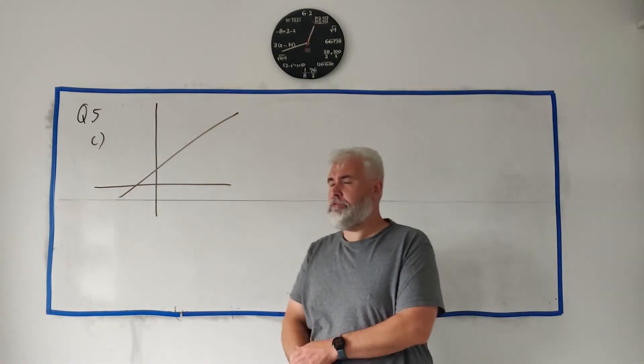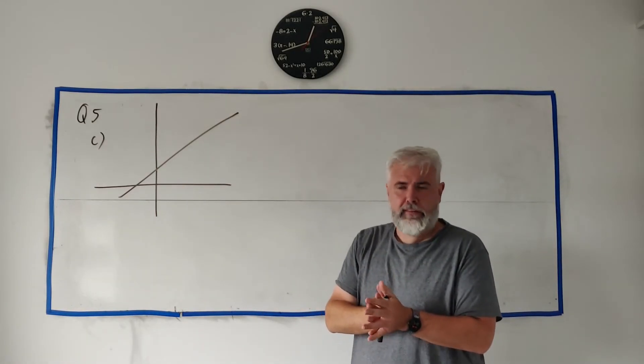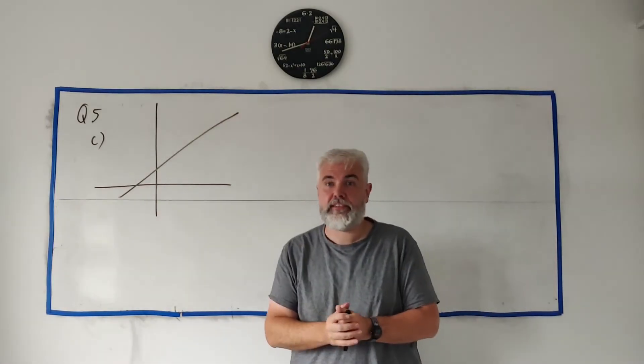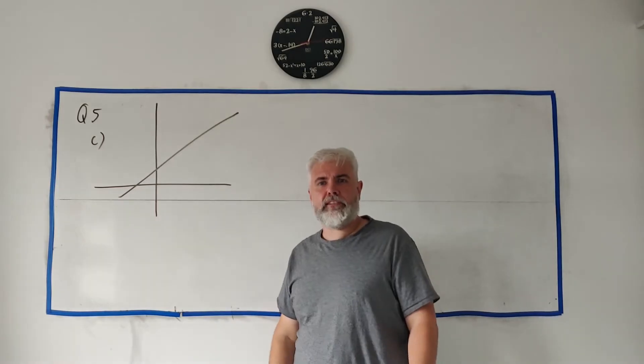In part C they give us a function they call g(x) and they say it's a linear function. Now that's just a fancy way to say it's a line, this guy's a line here.